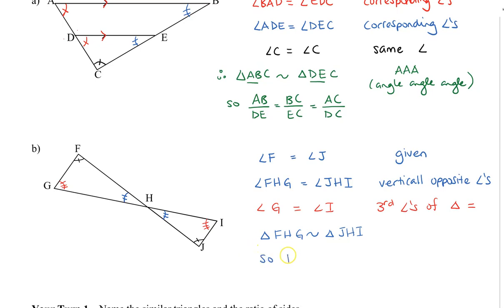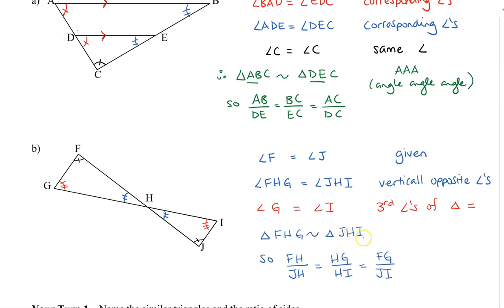So we now know that FH divided by JH equals HG divided by HI, which equals FG divided by JI. When you're writing out this proportion, you don't actually have to go back to look at the triangle. Because now that we've written that triangle FHG is similar to JHI, we can just take the letters from here and match them up.